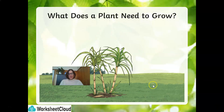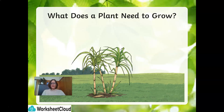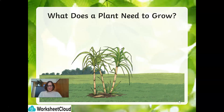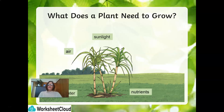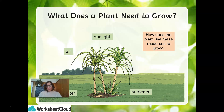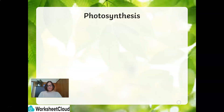Let's recap. What does a plant need to grow? It needs sunlight, air, water, and nutrients. But now let's ask ourselves: how does a plant use these resources to grow? Let's take a close look at photosynthesis.